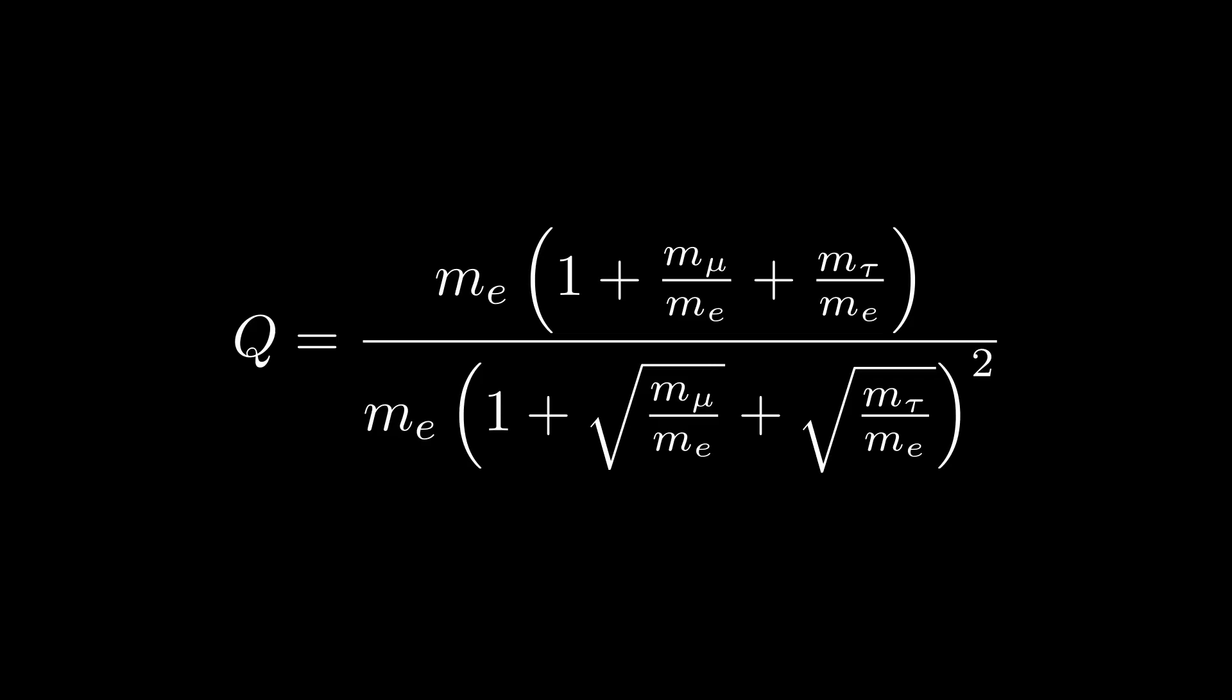Firstly, we factor out the mass of the electron. We assume that by plugging in the measured mass values, we get the exact value for Q. If Q is rational, then it necessitates that both the denominator and numerator are also rational.